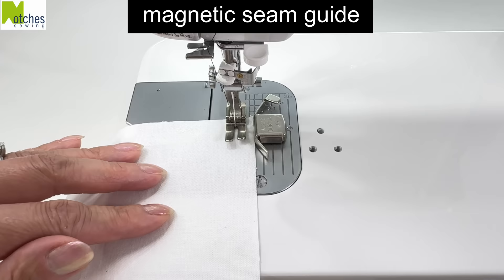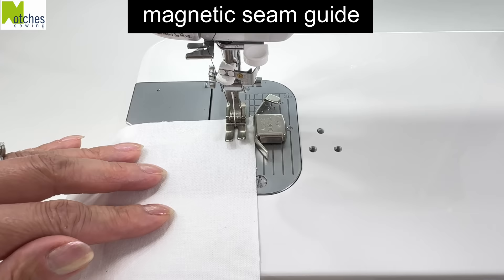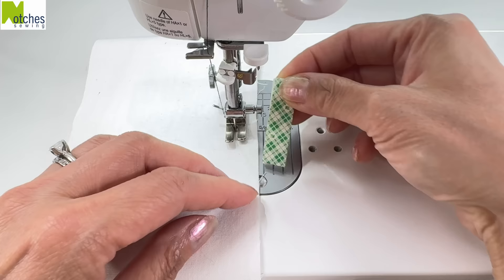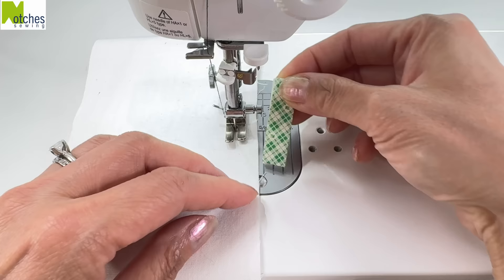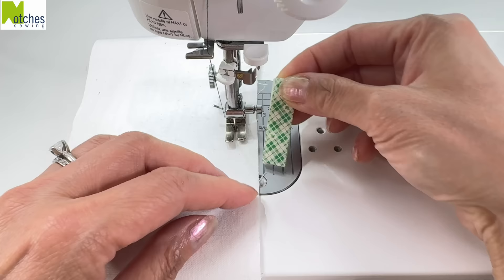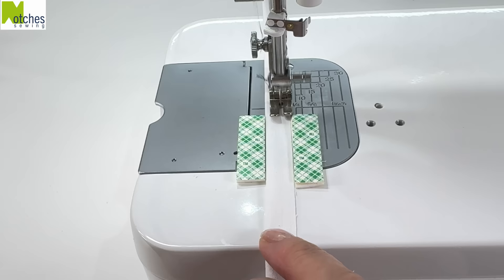If you don't have one of these magnetic seam guides to help you sew straight, you can use mounting tape. This tape has a nice thickness. Just cut a couple of inches and then double it up to get a nice thick edge. If you find it a bit difficult to sew skinny straps straight, just put tape on both sides.